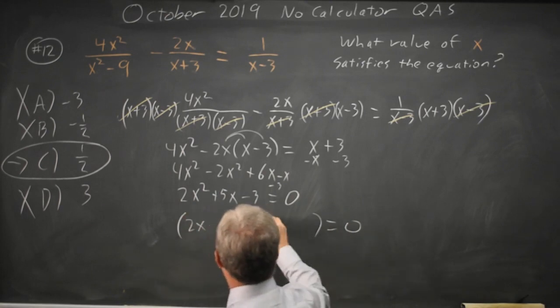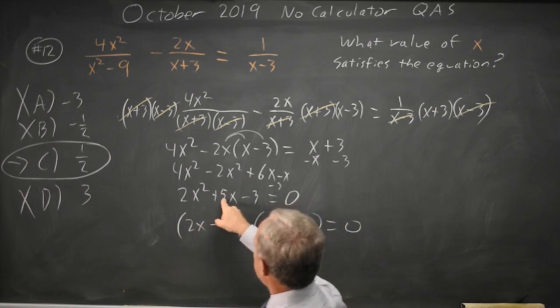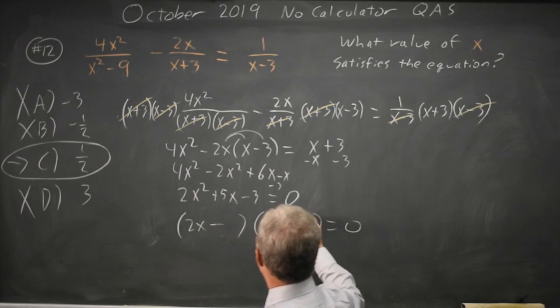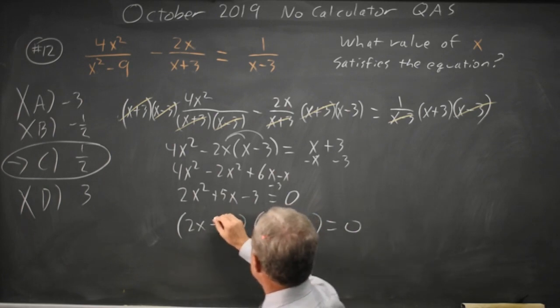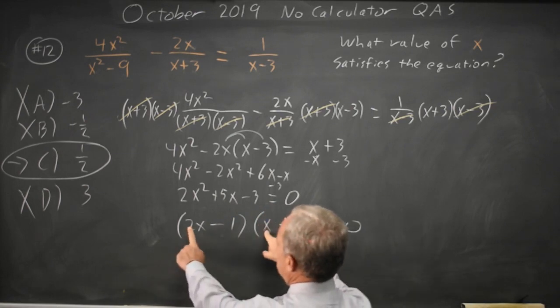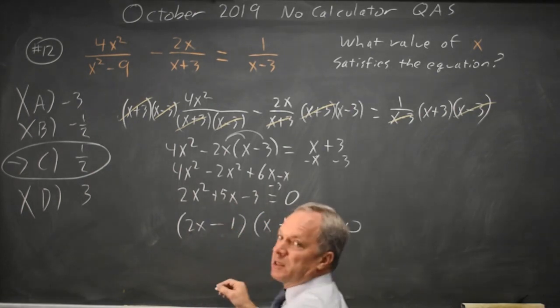So I have 2x and x. I have a plus and a minus. I want to get a 5 which would be 6 minus 1. That would be x plus 3. Let's check FOIL. 2x squared plus 6x minus x is plus 5x minus 3. That works.